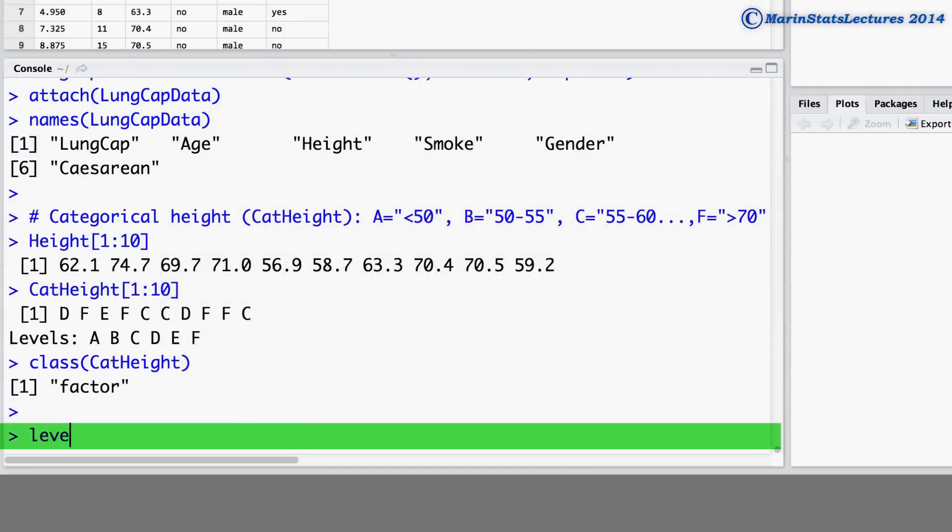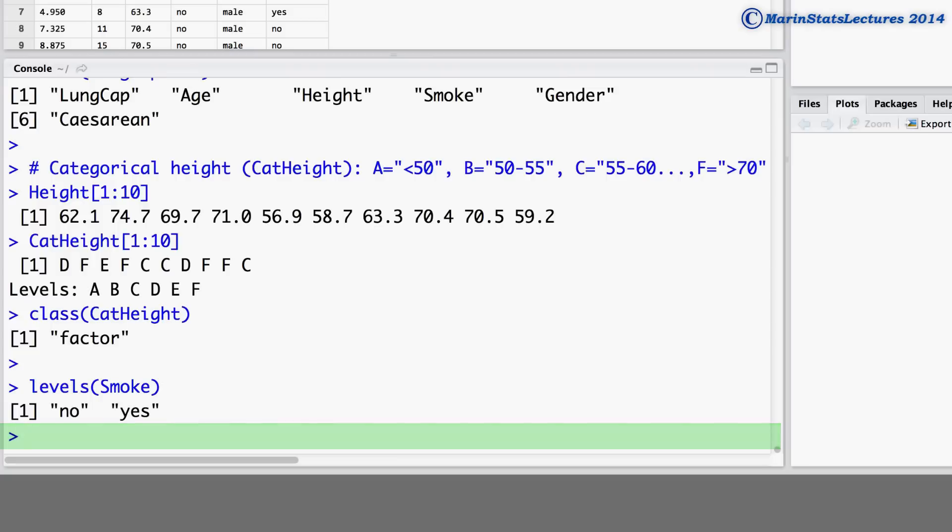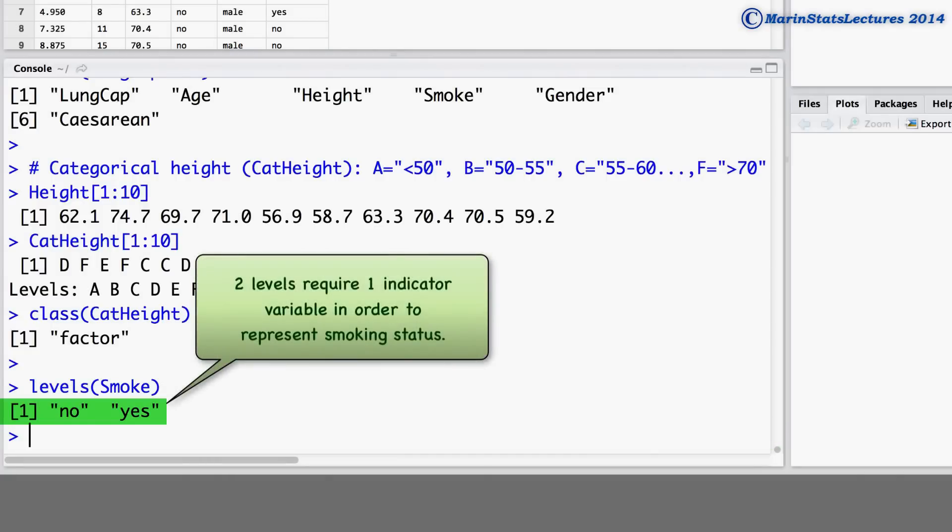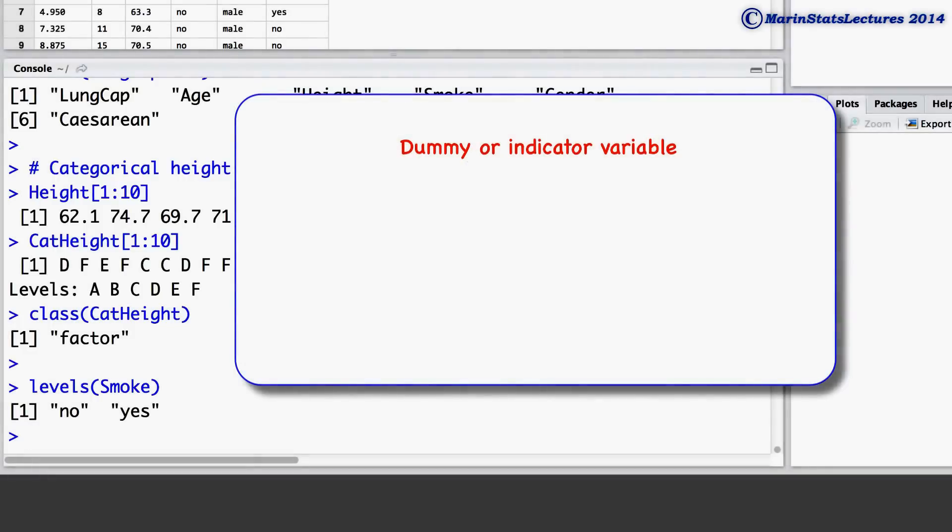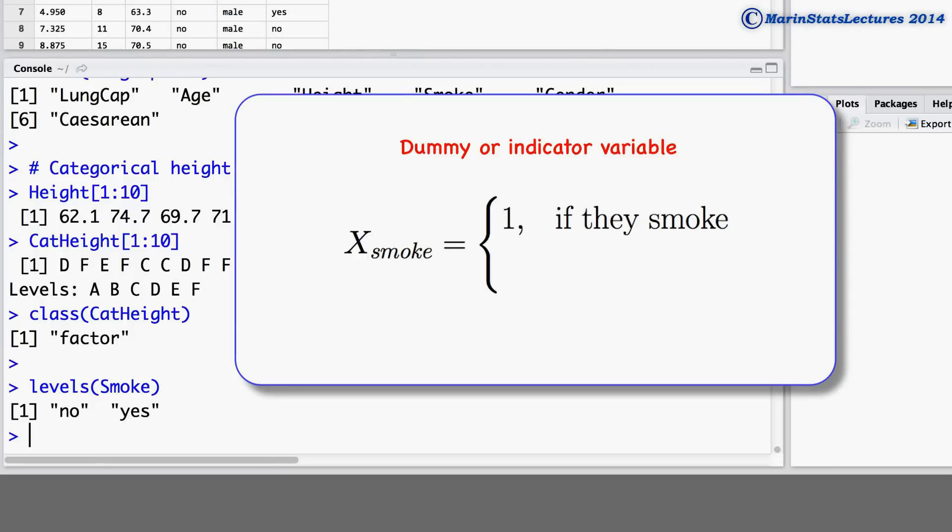For example, the variable smoke has two levels: no and yes. These two levels will require one indicator variable in order to represent smoking status. We can create a dummy or indicator variable we'll call xSmoke, and we'll set this equal to 1 if the individual smokes or smoking is yes, and 0 otherwise.